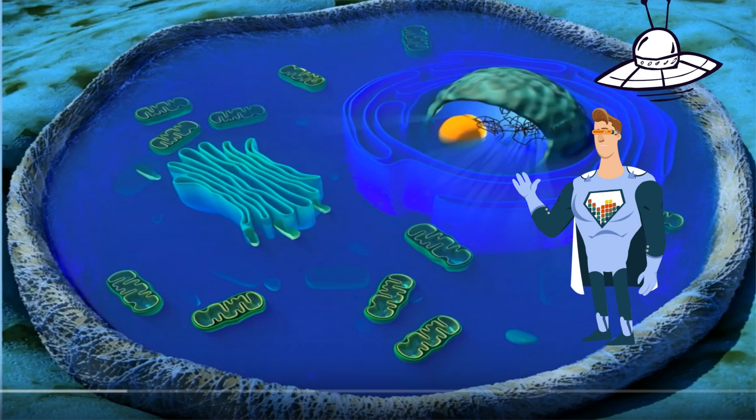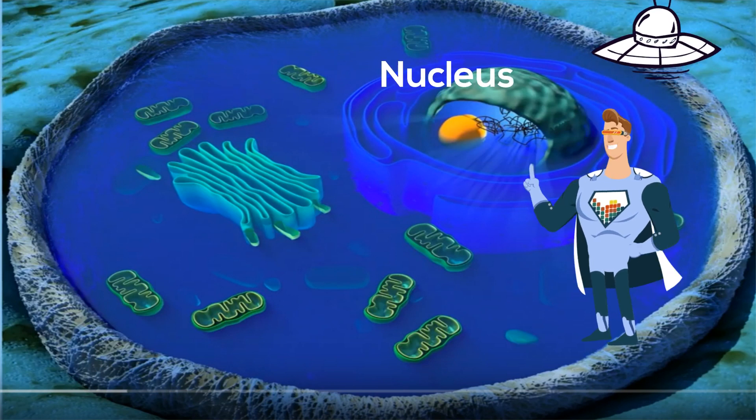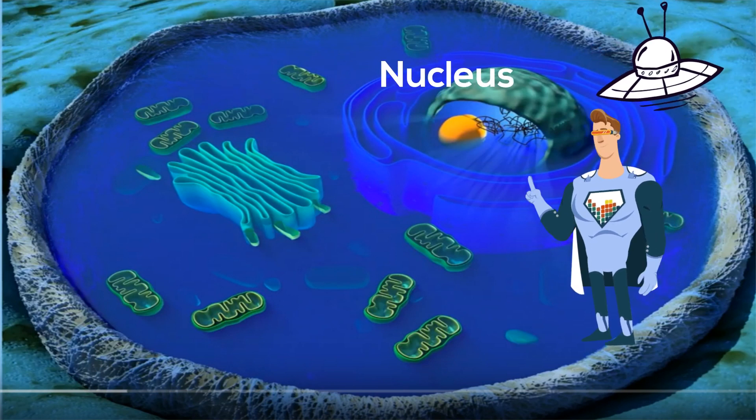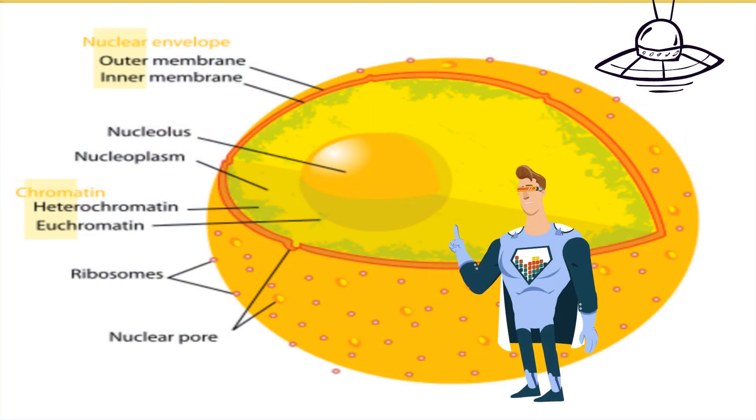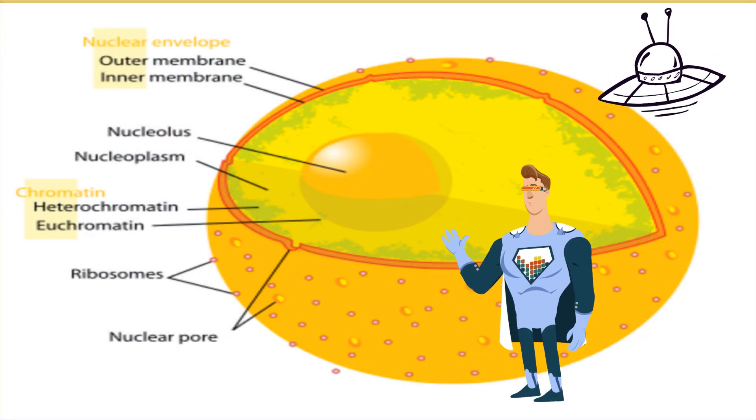Let's start with this large organelle called the nucleus. It is sometimes called the brain of the cell because it contains the instruction manual of the cell called DNA.